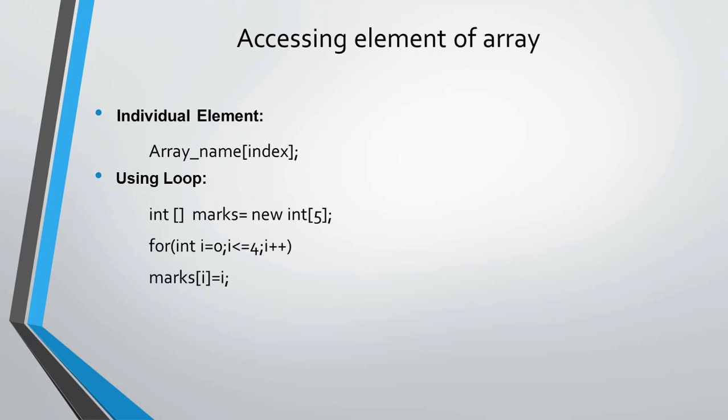Accessing elements of an array: To show a particular element, use the array name followed by the index. Using a loop, declare the array, then use a for statement to iterate through and access the next elements of the array.